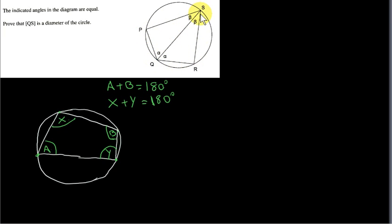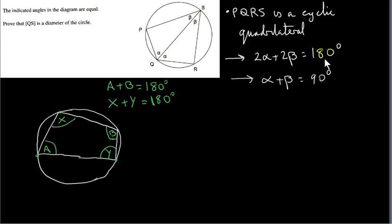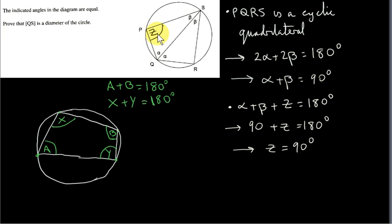We will use this theorem because PQRS is a cyclic quadrilateral. So the opposite angles in the cyclic quadrilateral PQRS sum to 180 degrees. This angle here is 2 alpha, and this angle here is 2 beta, so 2 alpha plus 2 beta equals 180 degrees. Dividing by 2, we deduce that alpha plus beta equals 90 degrees. If we call the angle at the top Z, we know that three angles in a triangle sum to 180 degrees, so alpha plus beta plus Z equals 180 degrees. Since alpha plus beta is 90 degrees, we get 90 plus Z equals 180, so Z equals 90 degrees.